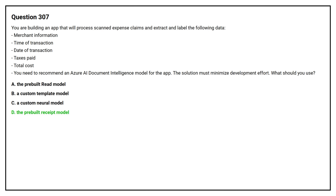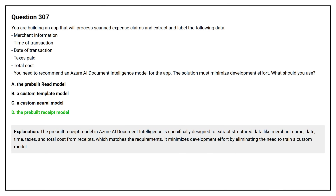The correct answer is Option D: The pre-built receipt model. The pre-built receipt model in Azure AI Document Intelligence is specifically designed to extract structured data like merchant name, date, time, taxes, and total cost from receipts, which matches the requirement. It minimizes development effort by eliminating the need to train a custom model.